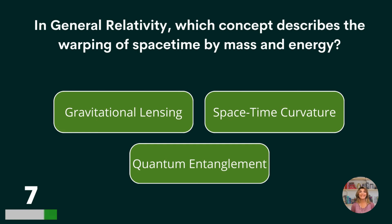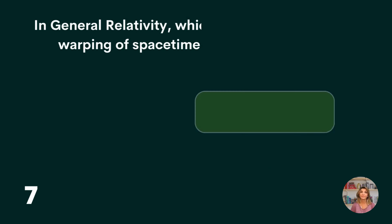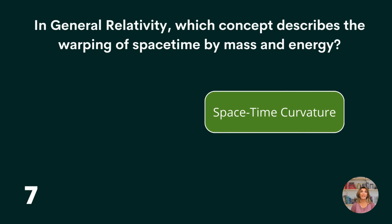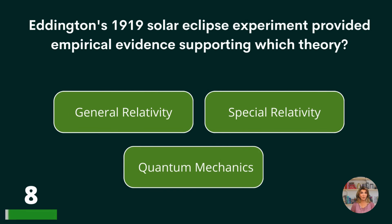In general relativity, which concept describes the warping of space-time by mass and energy? Gravitational lensing, space-time curvature, or quantum entanglement?